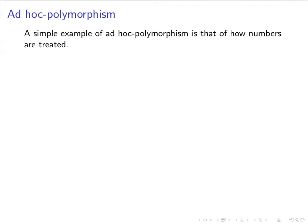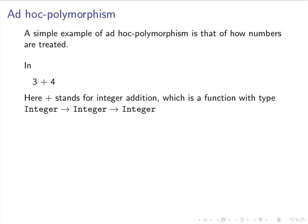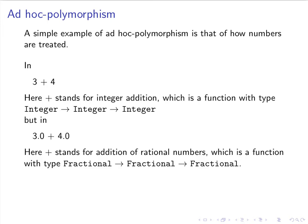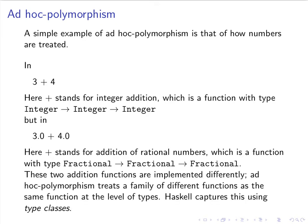Let's have a look at ad hoc polymorphism first. A simple example is from the treatment of numbers. Consider the expression 3 plus 4 — here, plus stands for integer addition, a function with type integer to integer to integer. But we could write 3.0 plus 4.0, where 3.0 and 4.0 are rational numbers, so plus now stands for addition of rational numbers, a function with type fractional to fractional to fractional. These two addition functions are implemented completely differently. So in ad hoc polymorphism, we treat a family of differently implemented functions as the same function at the level of types, and the way this is captured in Haskell is by type classes.